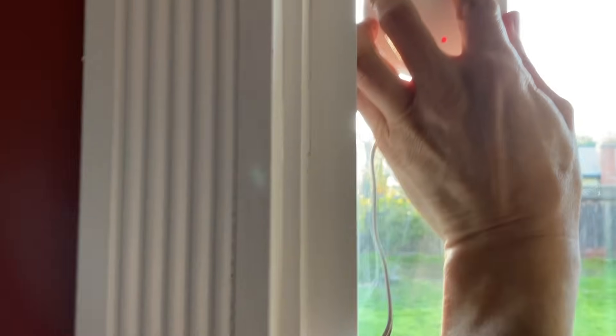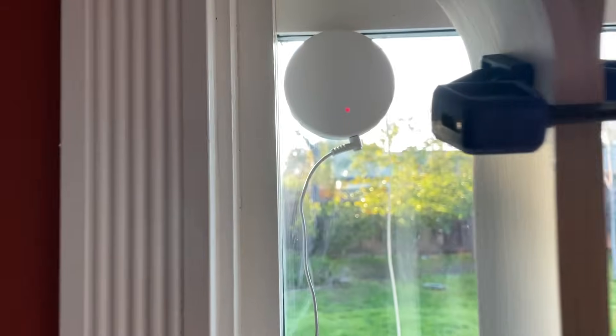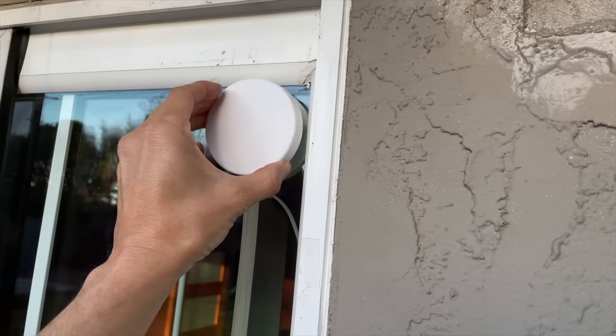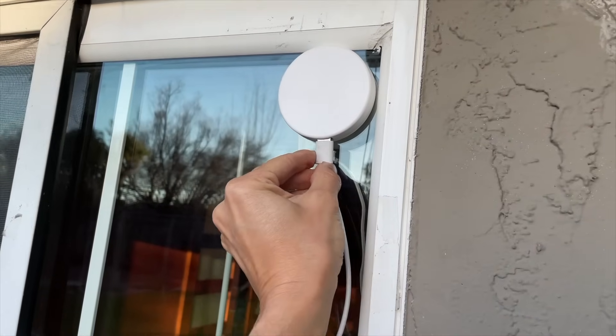Simply place the transmitter on the inside of your window, the receiver on the outside, and any 5-volt device can be powered up to 10 watts.